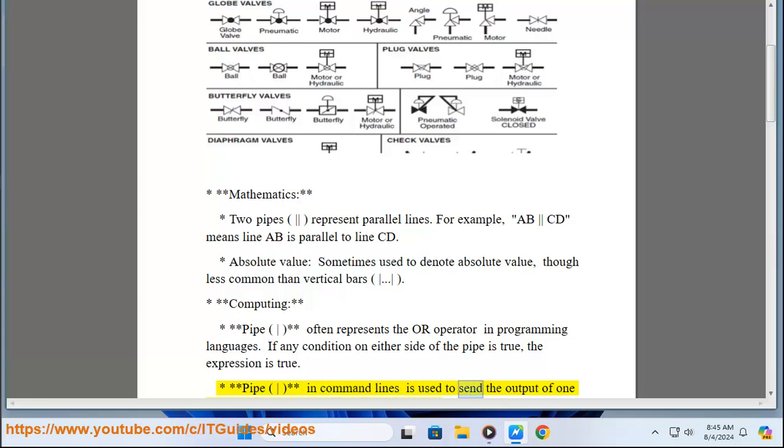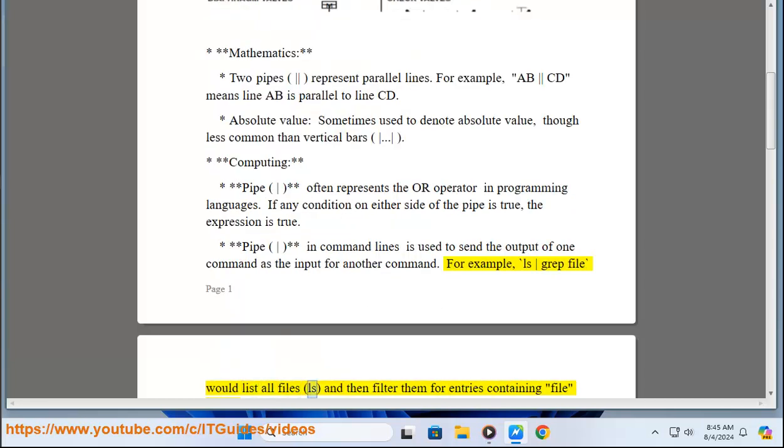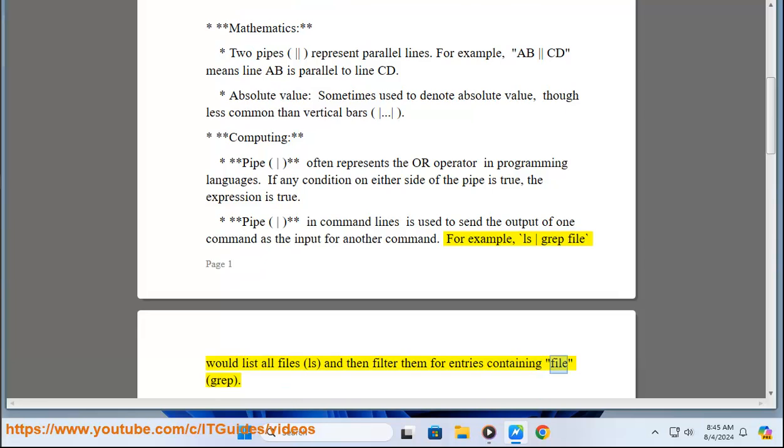Pipe in command lines is used to send the output of one command as the input for another command. For example, ls | grep file would list all files (ls) and then filter them for entries containing file (grep).